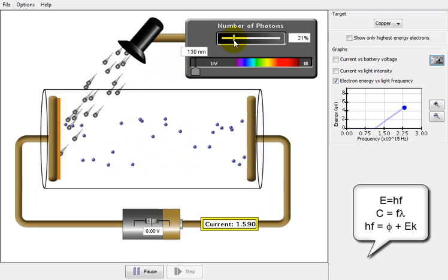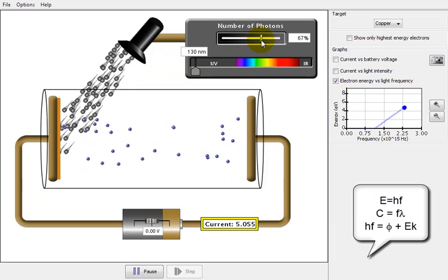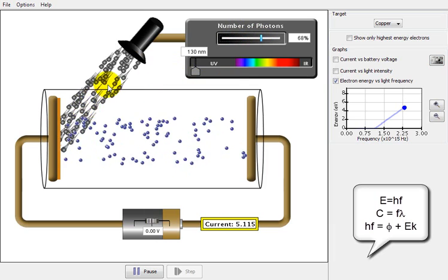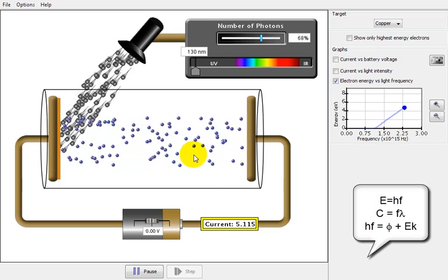If I change the intensity of our incoming photons, we can see that this has the effect of increasing the number of photons hitting the surface, which also increases the number of electrons being released from the metal surface.